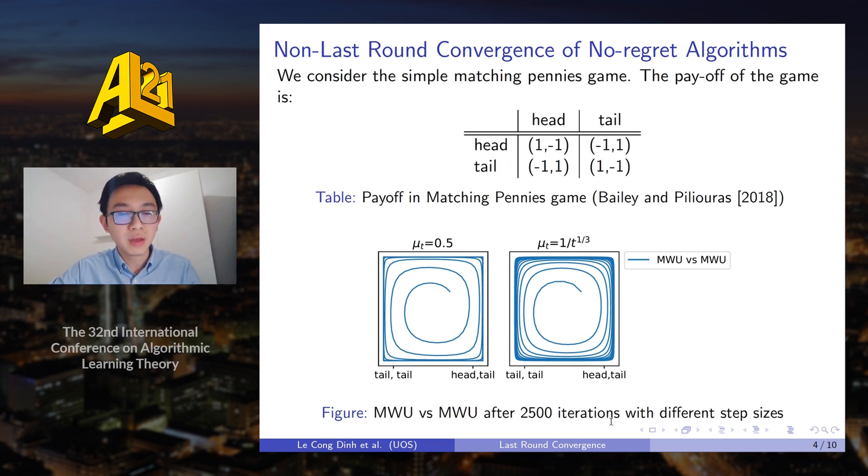We can see from the figure, if both players follow the multiplicative weight update algorithm, then the trajectories of the strategy will move away from the Nash equilibrium, which is the center of the figure, and towards the boundaries of the figure.